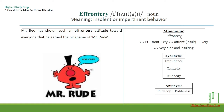The mnemonic for remembering 'effrontery': break it apart as 'f + front + airy,' and combine 'effron' to think of the word 'affront,' which means insult, and think of 'airy' as 'very' — so it means very rude and insulting.